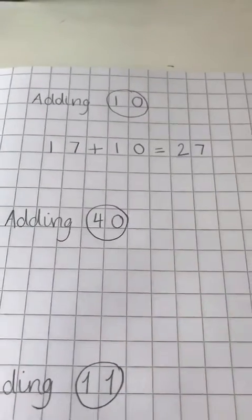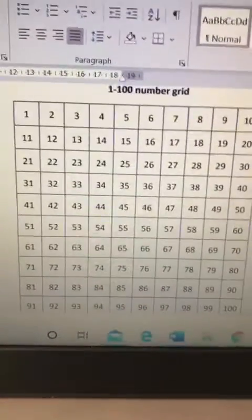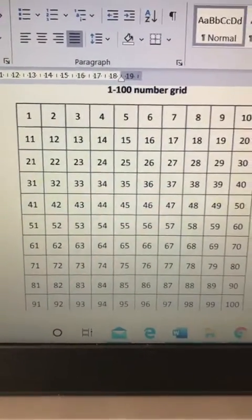Now adding 40 is the exact same method, except instead of moving down one row, we have to move down four rows.